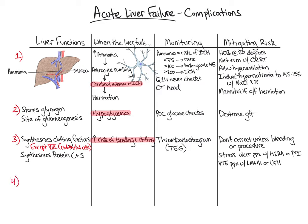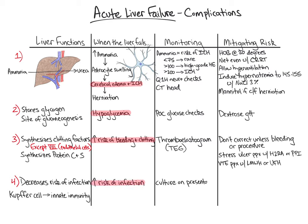Finally, a healthy liver decreases our risk of infection. The Kupffer cell, a liver macrophage, plays a key role in innate immunity. When the liver fails, patients are at increased risk for infection. Patients should be cultured on initial presentation and any time there is concern for infection. All known infections should be treated aggressively. In addition, we should have a low threshold for empiric antibiotics if the patient decompensates or the source is unknown.